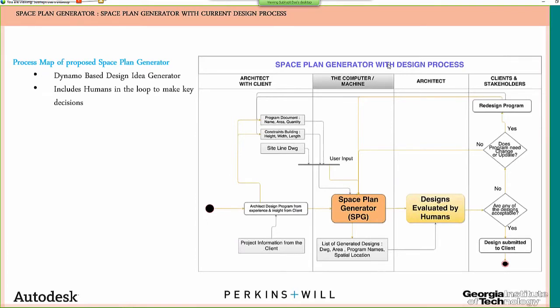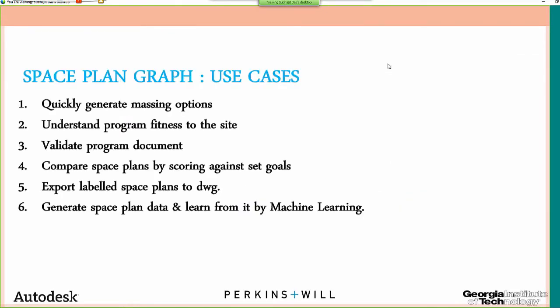Some use cases: quickly generate massing options, understand the program fitness to the site — for example, your client asked you to design a hotel with 300 rooms but given building code regulations you can only fit 150. Space Plan Generator can prove that very quickly. You can also compare different space plans by scoring them against set goals — like maximizing hotel rooms or minimizing nurse travel distance. When a space plan satisfies your criteria, you can export it from Dynamo as a DWG with each space labeled and work on top of it.